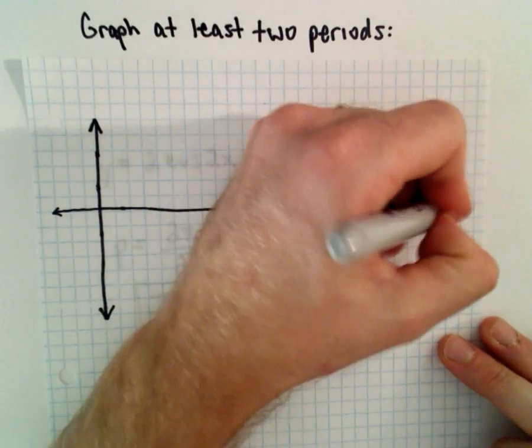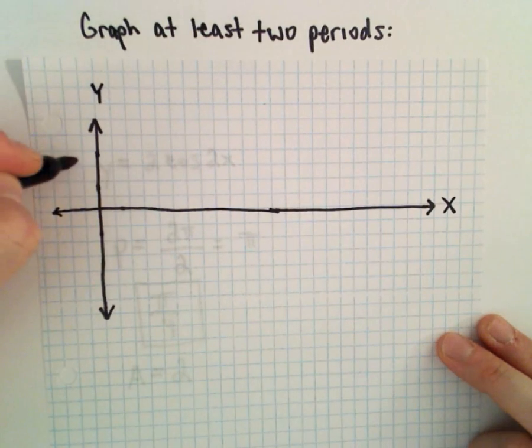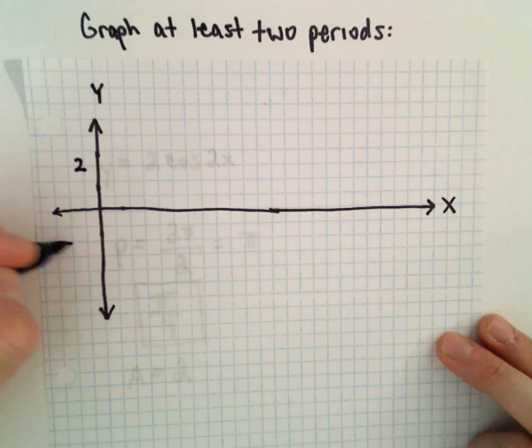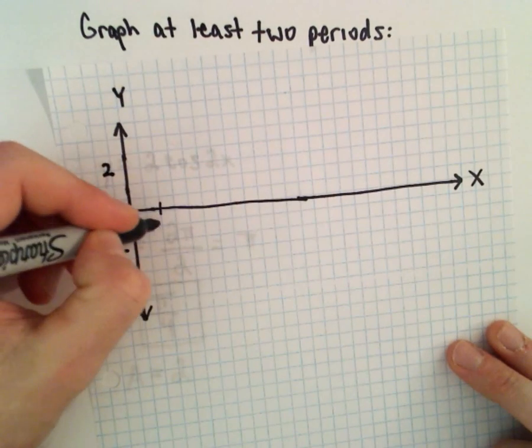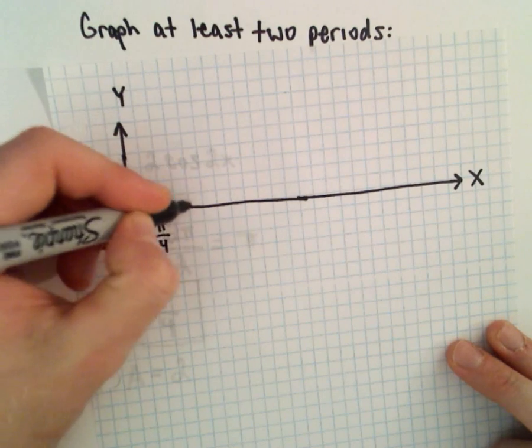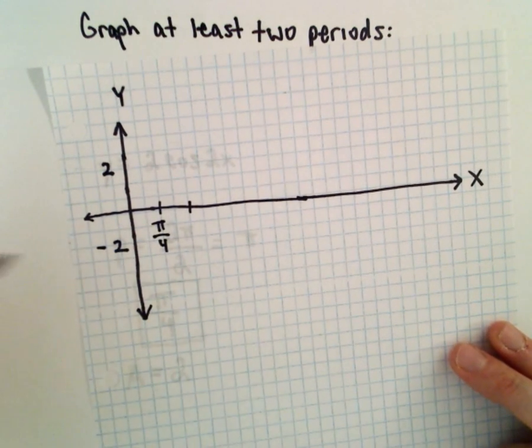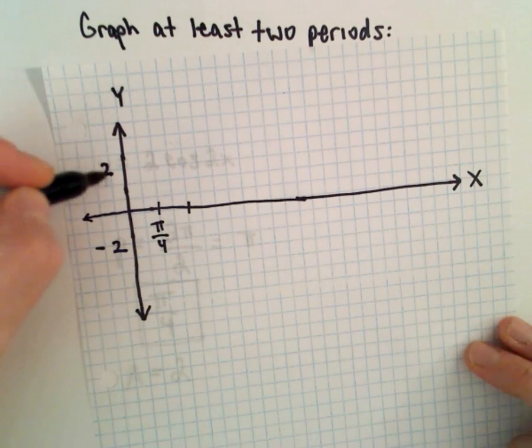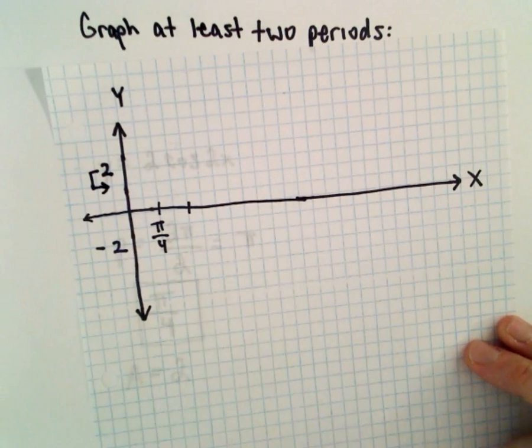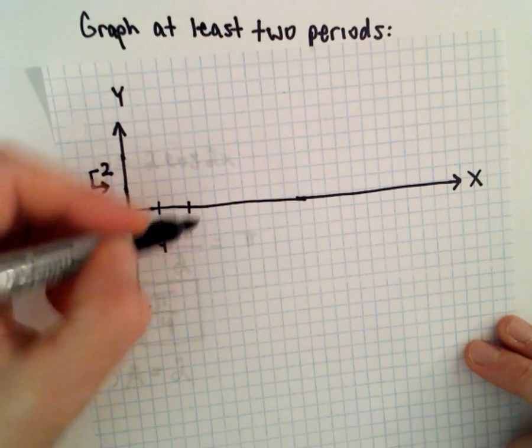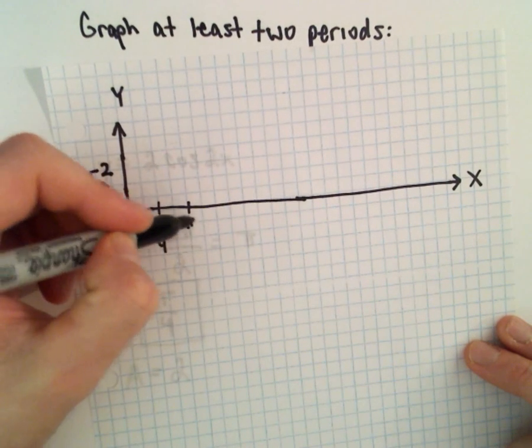So here's my graph. We've got x, we've got y. The amplitude goes from positive 2 to negative 2. And again, the increments I'm going to use will be π over 4. So again, the units on the x-axis and y-axis are not exactly the same. So positive 2 will be right there. Negative 2 looks like it's in the right place.